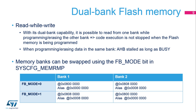With a dual-bank memory, it is possible to read from one bank while programming or erasing the other bank. Code execution is not stopped when the flash memory is being programmed. When programming or erasing data in the same bank, the AHB is stalled as long as the flash memory controller is busy. Using the FB mode bit in the System Configuration Memory Remap Register, the two flash bank addresses can be swapped.